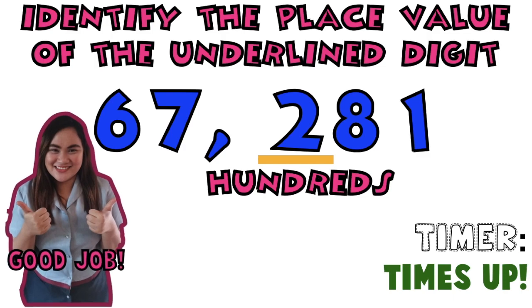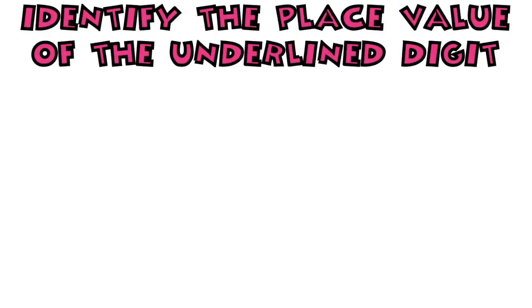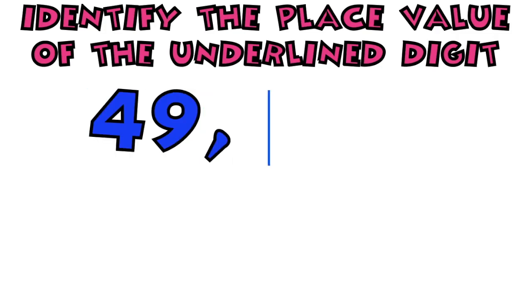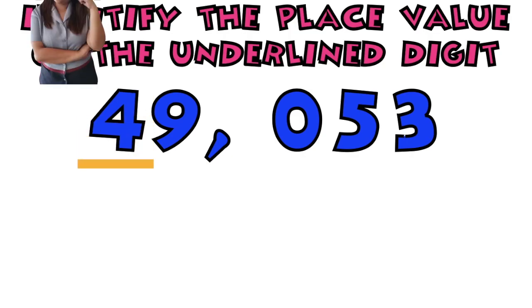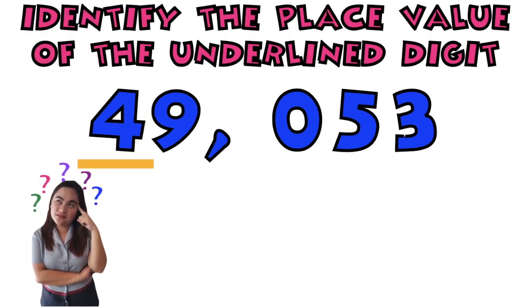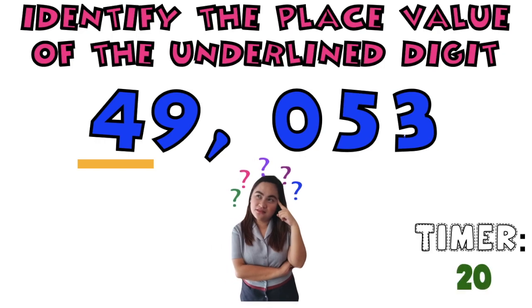Let's have number 2. Again, you are going to identify the place value of the underlined digit. I have here 49,053. What is the place value of digit 4? Timer starts now.